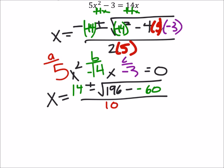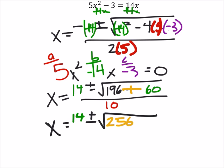All right, continuing with the simplification on this, we've got x equals 14 ± the square root of 196 minus a -60, so that's going to be plus - that becomes 256, and this is all over 10.